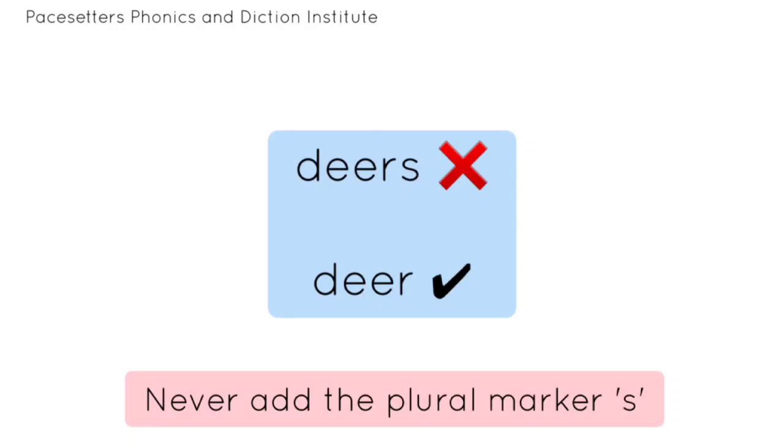Deer. Deer is spelled D-E-E-R. Never add the plural marker 's' to the word deer. Deer is deer.